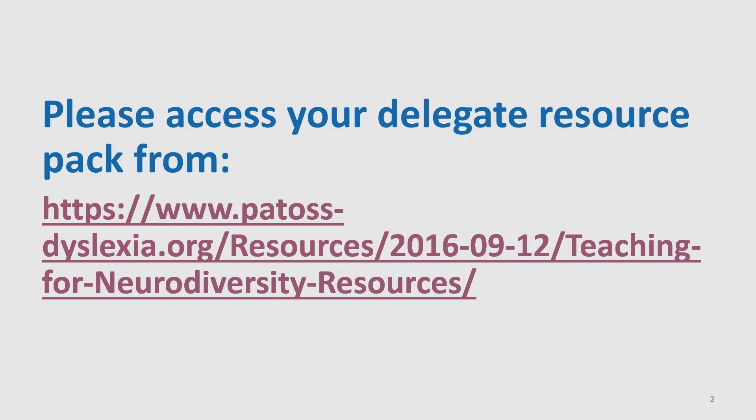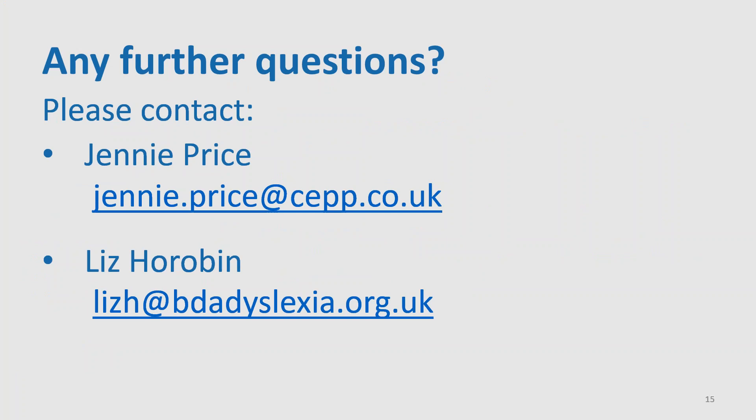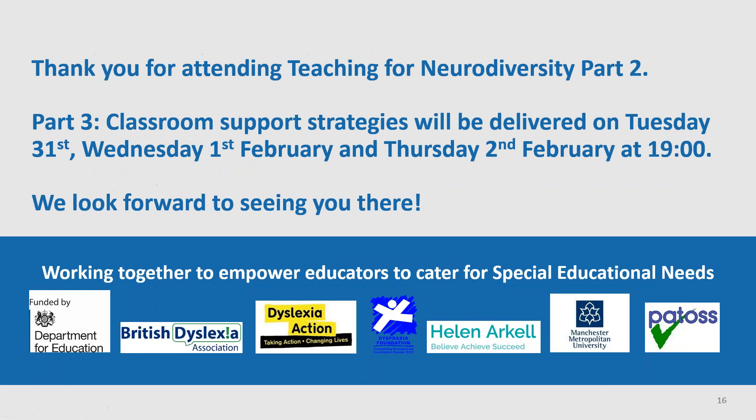Our email addresses are on the slide now. Remember that part three of the training is going to be delivered next week by our colleagues from Dyslexia Action. It's split into three different levels: primary on the 31st, secondary on the 1st, and post-16 on the 2nd of February. Do make sure you sign up for the correct level, and if you want to attend more than one, please do. Thank you so much for attending tonight's session — we really hope you come along to next week's ones and look forward to seeing you there. Thank you and good night.